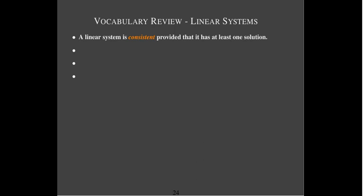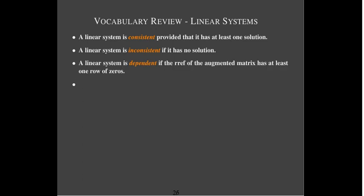Some vocabulary associated with linear systems. A system is consistent if it has at least one solution — it may have one solution or infinitely many. If it has no solutions, we call it inconsistent. A linear system is dependent if the reduced row echelon form of the augmented matrix has at least one row of zeros. And a homogeneous system is a system where the right-hand side is all zeros.